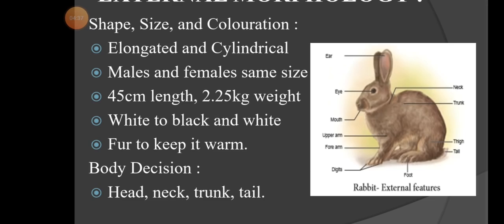The rabbit is elongated and cylindrical in shape. Males and females are more or less the same size. Its length grows up to about 45 centimeters and it weighs about 2.25 kg, roughly 2 to 3 kg. Its color ranges from white to black, and sometimes black and white or other colors.